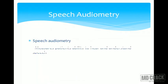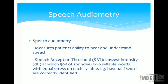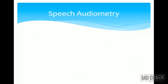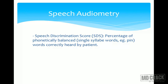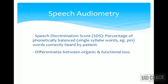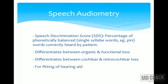Speech audiometry measures the patient's ability to hear and understand speech. The speech reception threshold (SRT) is the lowest intensity in decibels at which 50% of spondee words are correctly identified. Spondee words are two-syllable words with equal stress on each syllable, for example 'baseball.' The speech discrimination score (SDS) is the percentage of phonetically balanced words (single-syllable words, e.g., 'pin') correctly heard by the patient. Speech audiometry can differentiate organic from functional loss, cochlear from retrocochlear lesion, and determine whether a patient will benefit from a hearing aid.